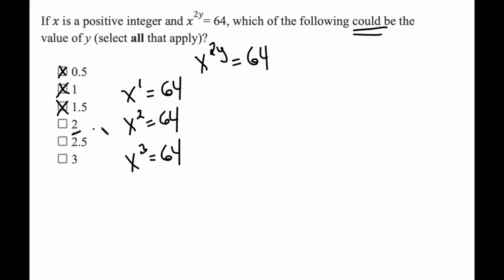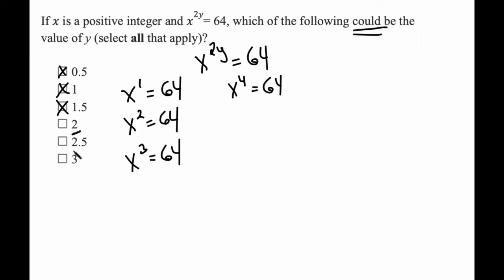However, when I plug in 2, I get x to the power of 2 times 2, so x to the power of 4 is equal to 64. That is no bueno — there's no positive integer that when multiplied by itself 4 times gives me 64. The same is true when I plug in 2.5, because I get x to the power of 5 equals 64.